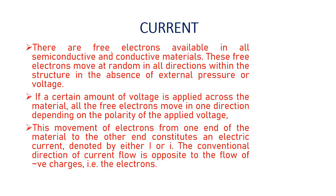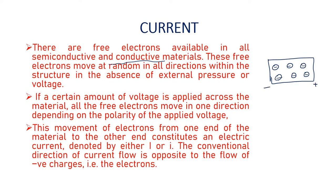Next, we are going to see about current. There are free electrons available in all semiconductor and conductive materials. These free electrons move at random in all directions within the structure in the absence of external pressure or voltage. If you apply voltage externally, the negative potential and the negative charge repel each other and electrons are attracted towards the positive charge.